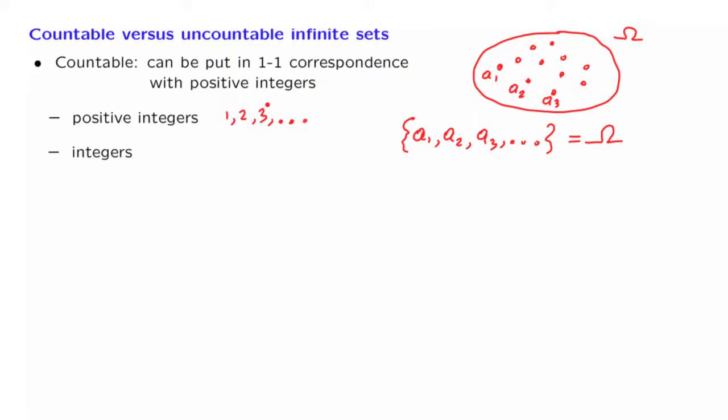For a more interesting example, let's look at the set of all integers. Can we arrange them in a sequence? Yes, we can, and we can do it in this manner, where we alternate between positive and negative numbers. And this way, we're going to cover all the integers, and we have arranged them in a sequence.